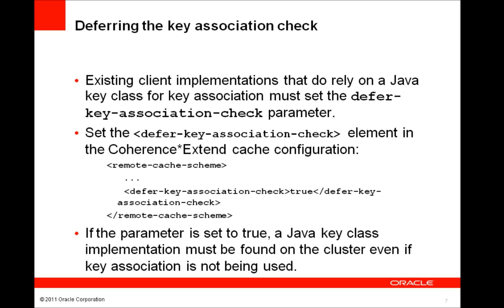What if you want the key association check to be performed in the cluster? To do this, you need to specify at each Extend client to defer key association processing, leaving it for the cluster to perform. You do this by setting the defer key association check element in each Extend client's cache config, in the remote cache scheme element. The flag by default is false, meaning that the Extend client will perform key association processing. Set the flag to true to defer to the cluster. If the parameter is true, then a parallel Java class implementation is required for all custom key classes used by the Extend client, regardless of whether the class implements key association.